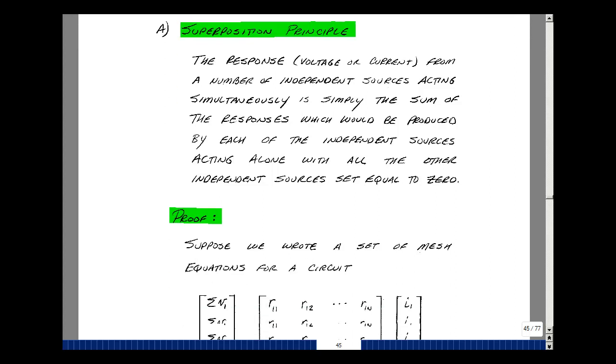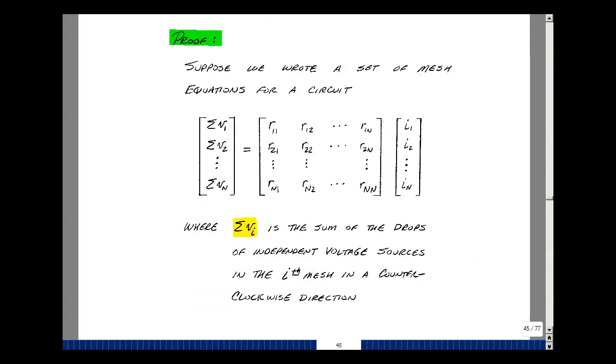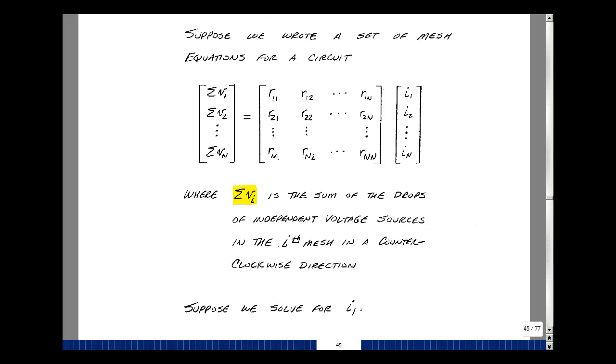Well, let's try to set up mesh equations for a circuit, because we just had a lesson on mesh equations. Suppose that we have n meshes, so we'll have an n by n matrix with resistive entries here. This would be on the diagonal, the sum of the resistances in the i-th mesh, and then the off-diagonal terms would be the negation of the resistances that are common between two meshes.